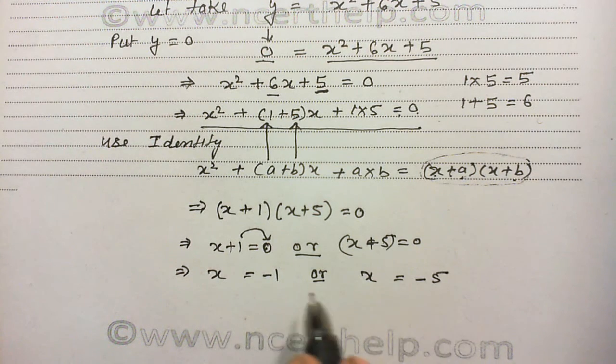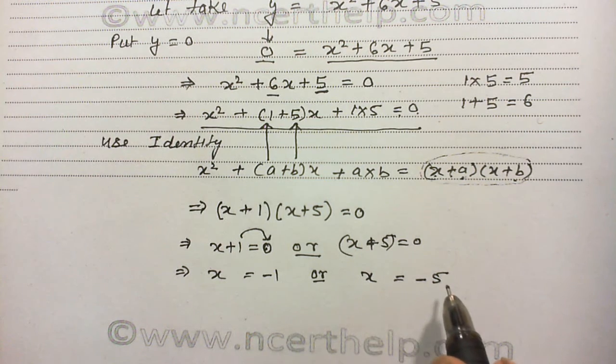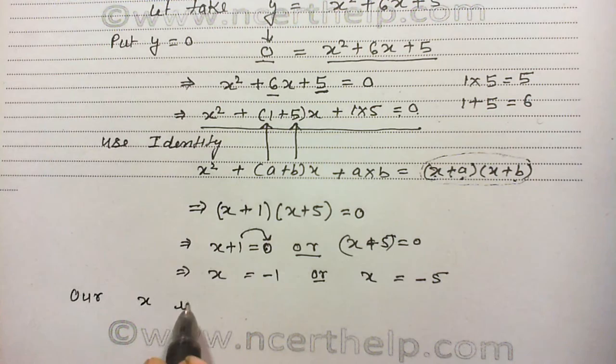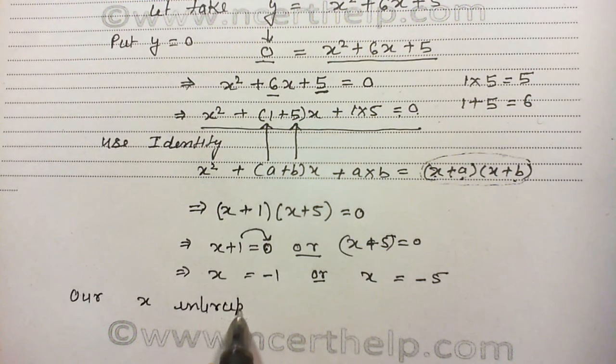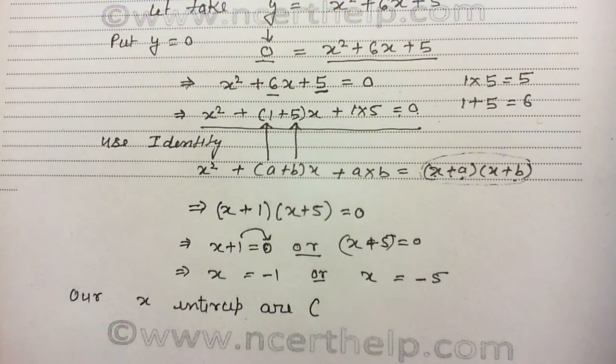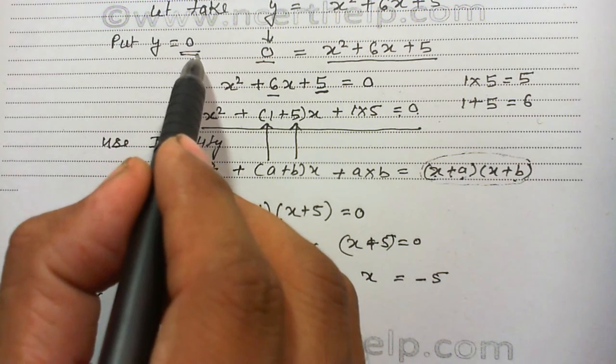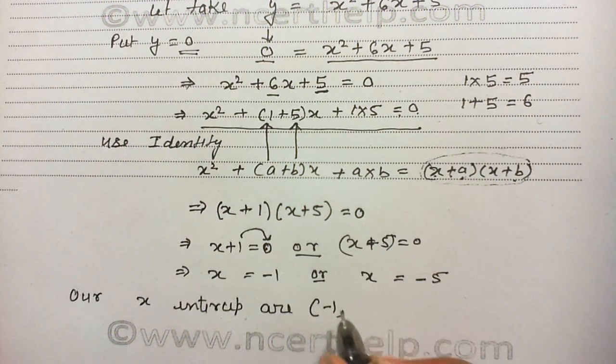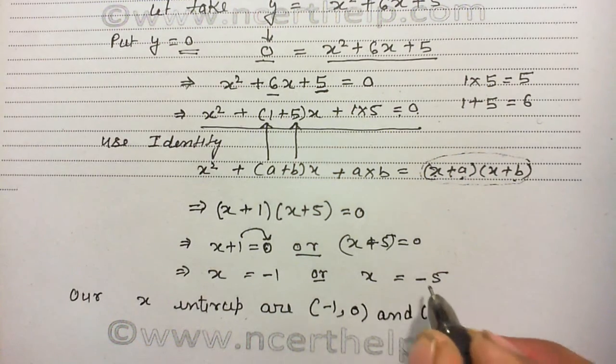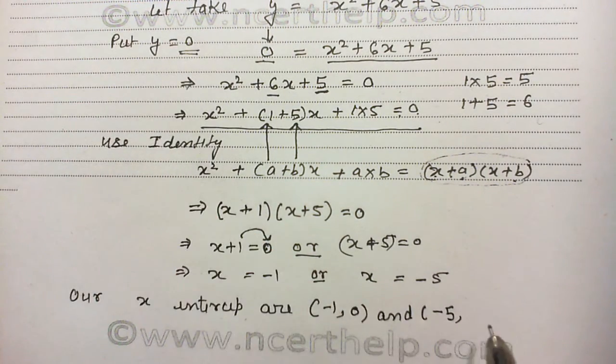Our numbers are x equals minus 1 and x equals minus 5. So our x-intercepts are x equals minus 1 comma, and we plug the value of y equals 0. Value of y will always be 0 and second intercept is minus 5 comma, value of y is 0 there.